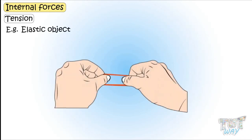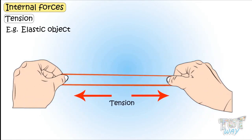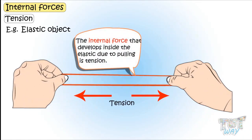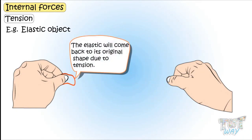Examples. Take a rope or an elastic object. Now pull it from both sides. The force that develops inside the rope due to pulling is tension. When you release the pulling force, the elastic will come back to its original shape due to tension.